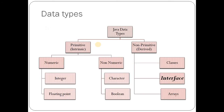In Java's data types classification, interface lies under the non-primitive category, next to classes. Non-primitive means you can divide it further without changing its meaning. So interface is a non-primitive kind of data type available in Java.